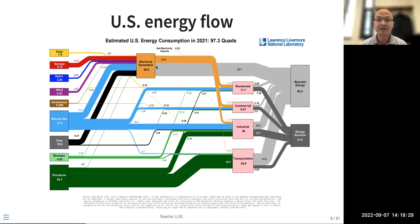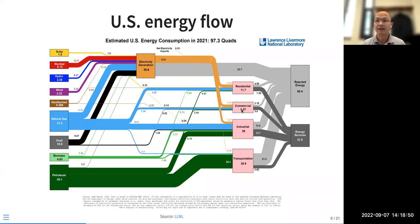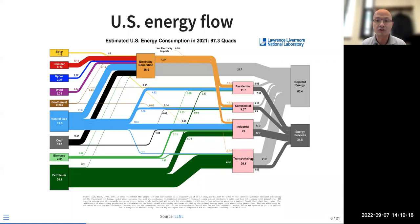The average efficiency of electricity generation using fossil fuels is about one-third. A big chunk of natural gas goes to generate electricity, and is also used in the residential and commercial building sector for heating and cooking, and in industry. Coal — more than 90% — goes to generating electricity. Biomass is mostly for industry usage, with some for transport as ethanol through biomass. Petroleum oil mostly goes to transport and industry.